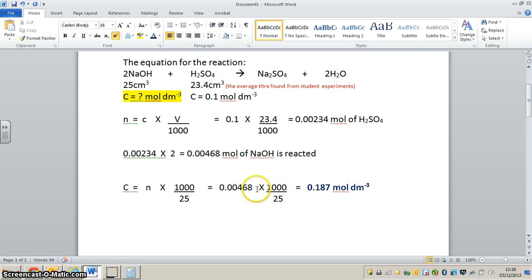We can do this in several ways on the calculator. I multiply this number by 1000 first and then divide by 25, or you can divide 1000 by 25 and multiply by 0.00468. Irrespective of the way you go, the answer comes out to 0.187 mol per dm³. That's the concentration of the sodium hydroxide in the solution that we reacted with the sulfuric acid.